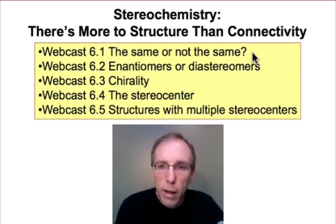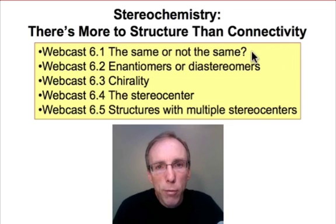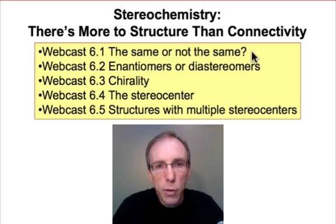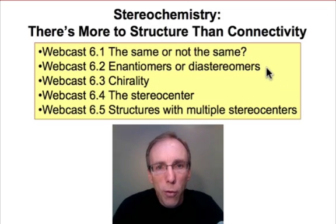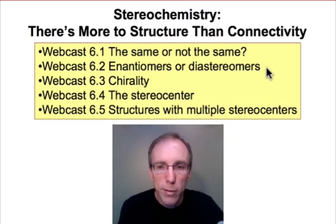We're going to begin by taking a pair of molecules with the same molecular formula and the same connectivity, and asking whether they're the same or not the same. If they're not the same, they're either enantiomers or they're diastereomers. We want to establish some methods to distinguish between these.